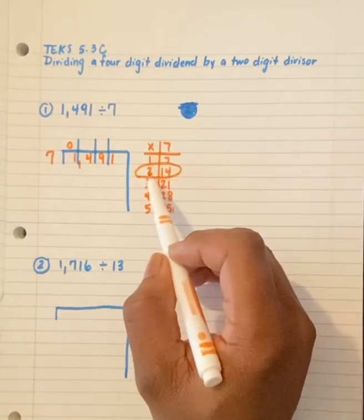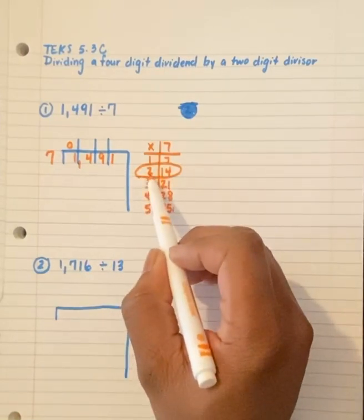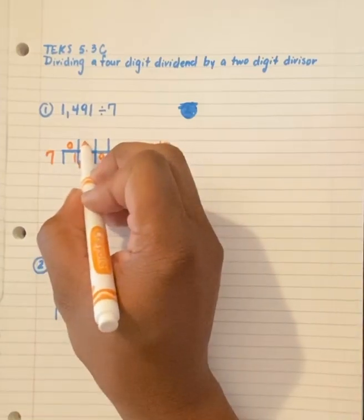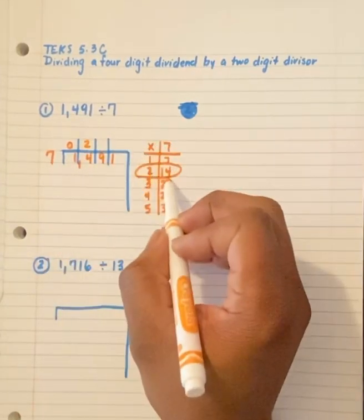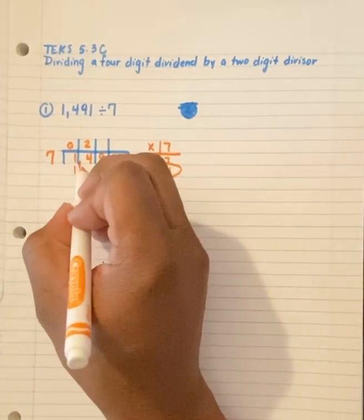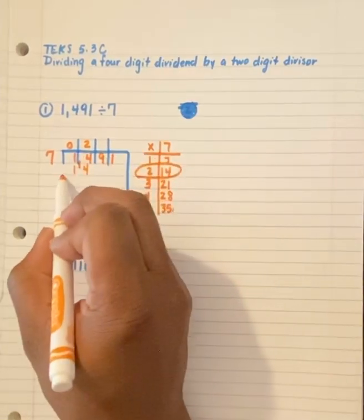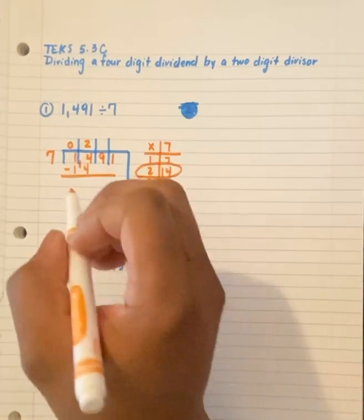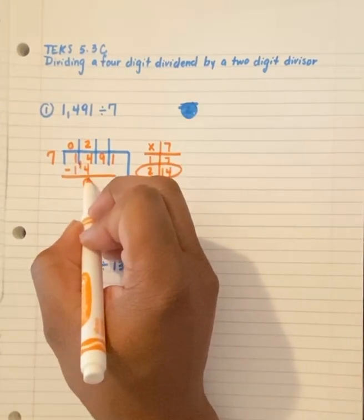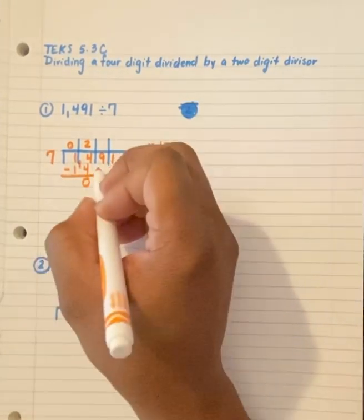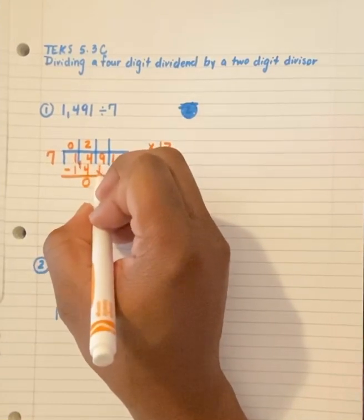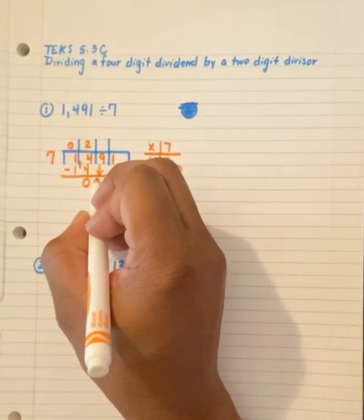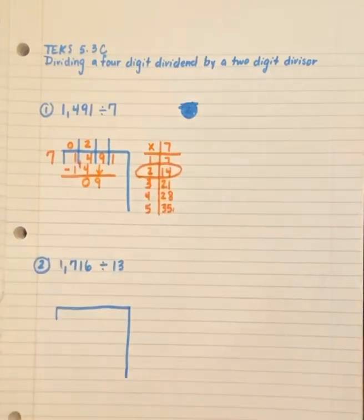7 times 2 gives me 14. The 2 goes above the 4, and the 14 goes below 14. Now I'm going to subtract. 14 minus 14 equals 0. Now I bring down my 9.